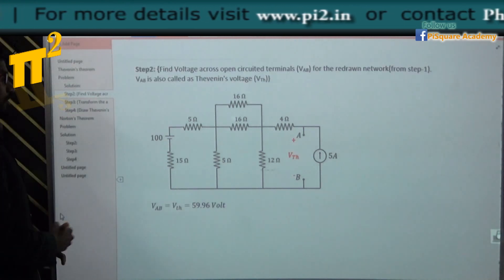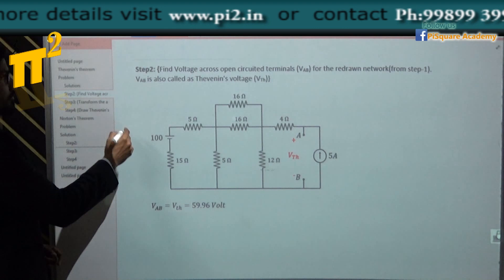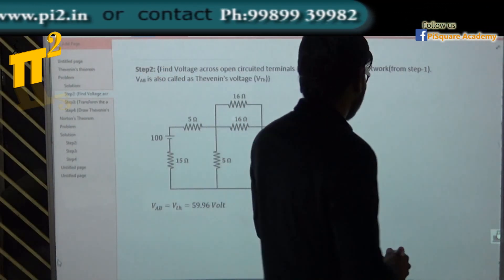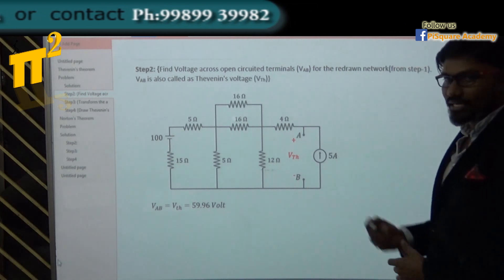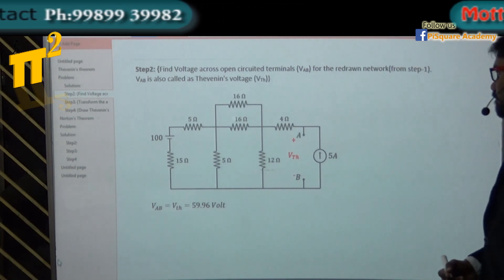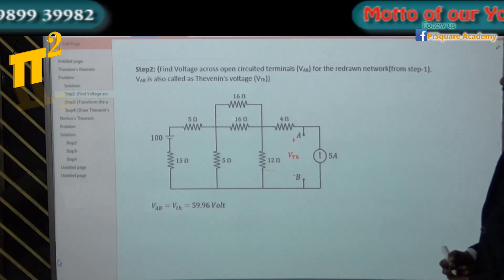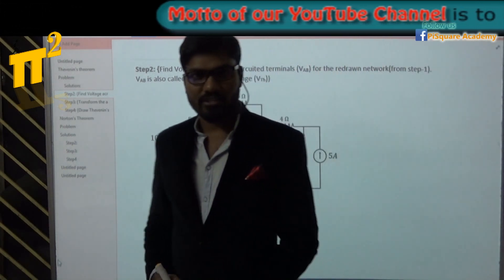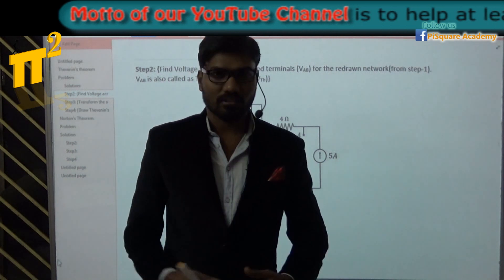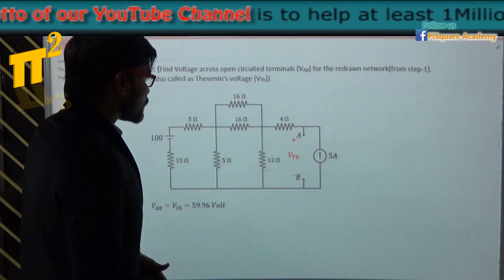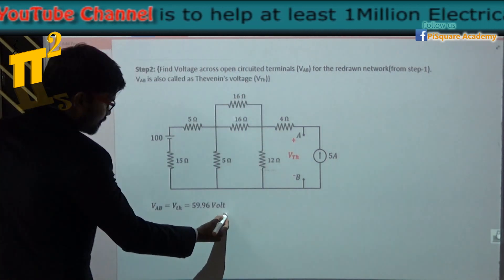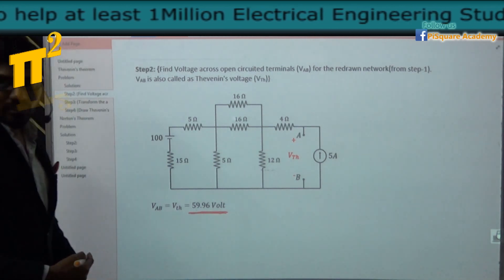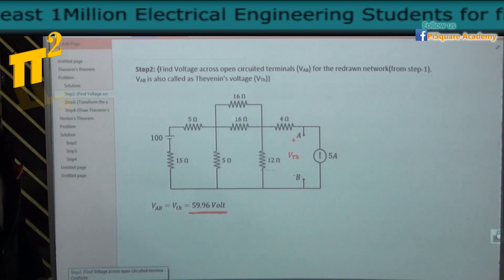Step 2: find the voltage across the open-circuit terminals, that is VAB, which is also called VTH — Thevenin's voltage. You may use superposition, mesh analysis, node analysis, or any method. In this case I got 59.96 volts.